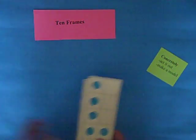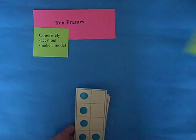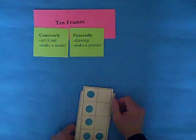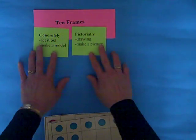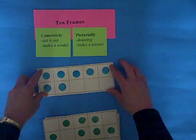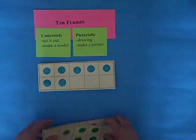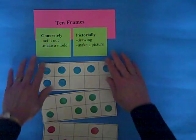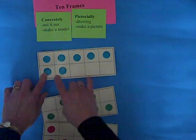Now as we move from the concrete to the pictorial, we could have flat ten frames and these are just done with bingo dabbers. Now you can mix them up. So these are in standard form.